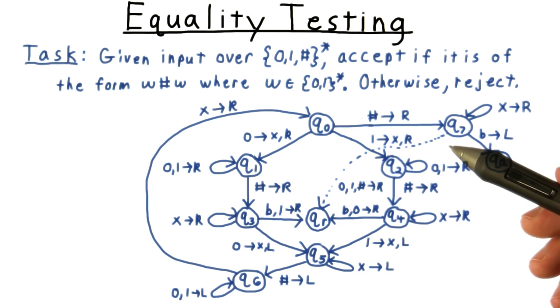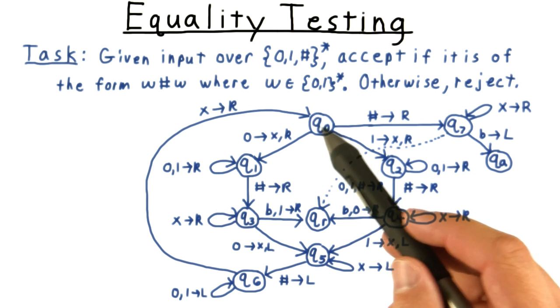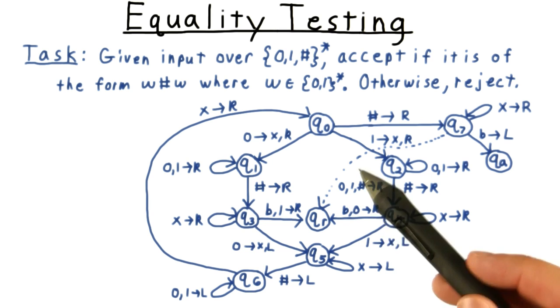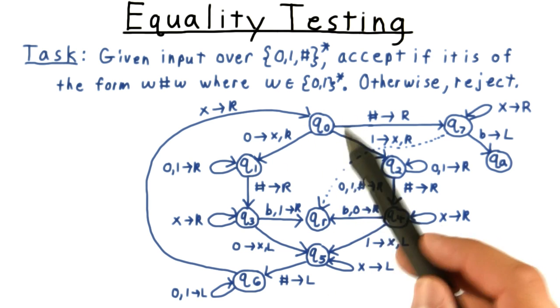Here's our initial state q0. From here, we usually read either a 0 or 1, and proceed down one of these two parallel paths. We need parallel paths here, because we have to remember whether it was a 0 or a 1 that we read initially.